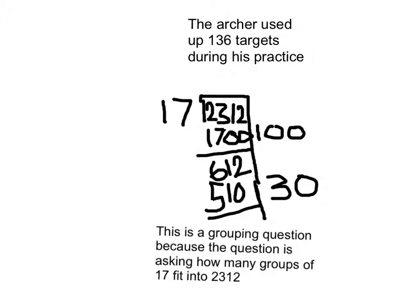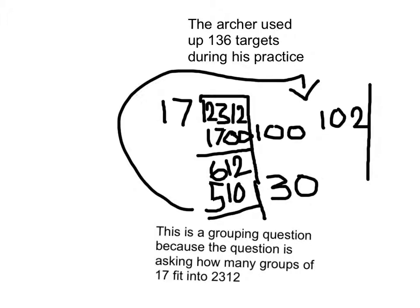612 minus 510 is 102. And now once again I have to guess about how many 17s are in 102. And I guessed 6. And there are 6 17s in 102.